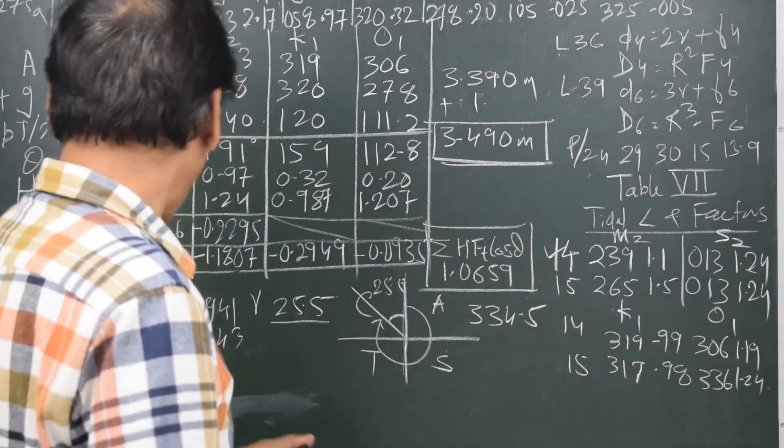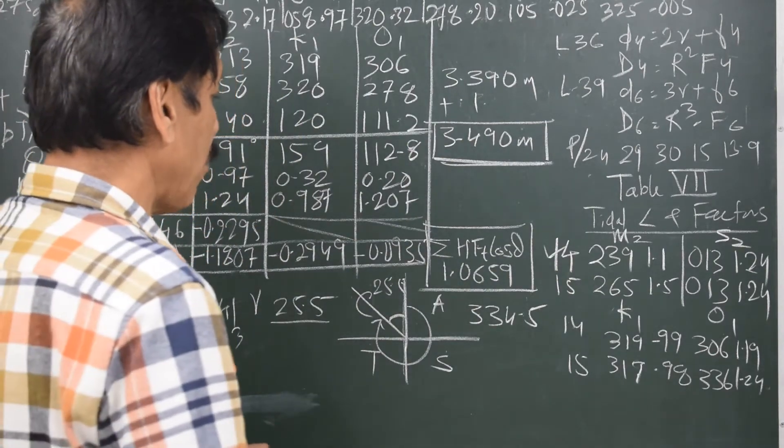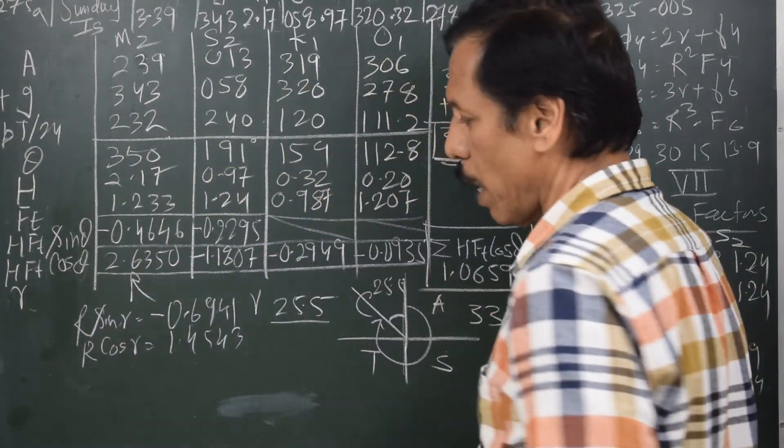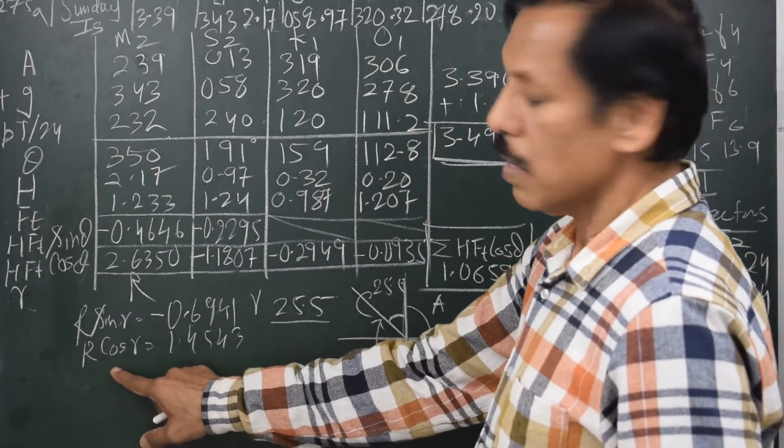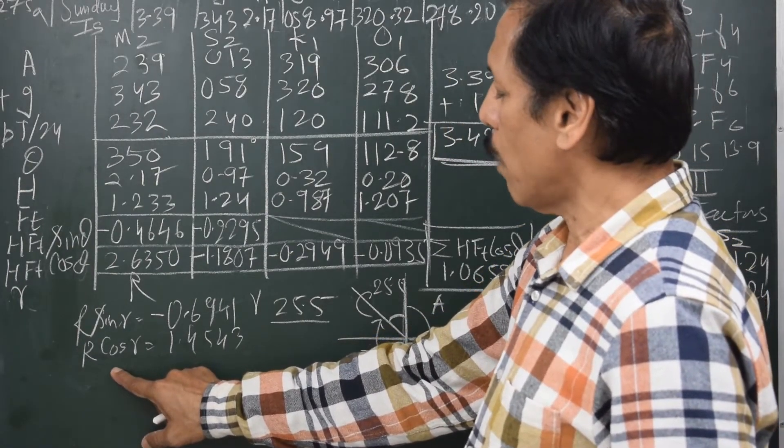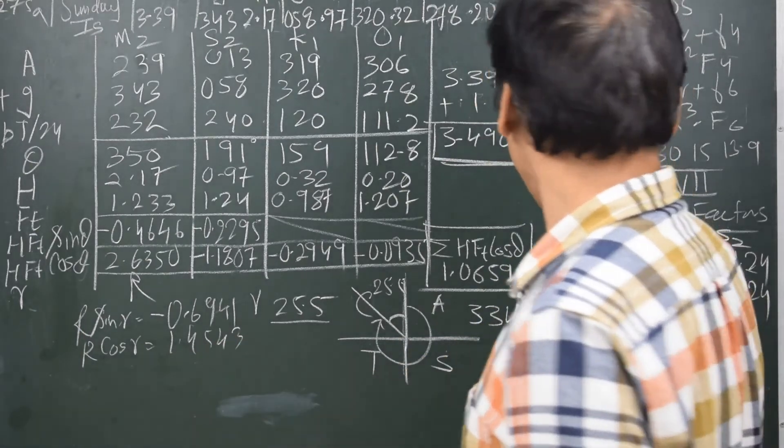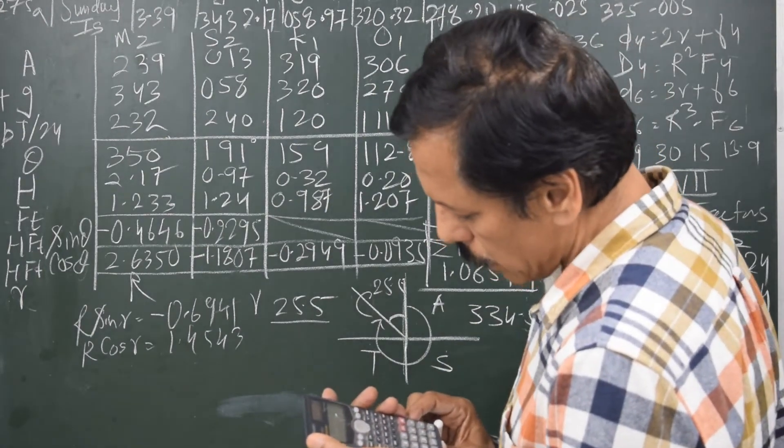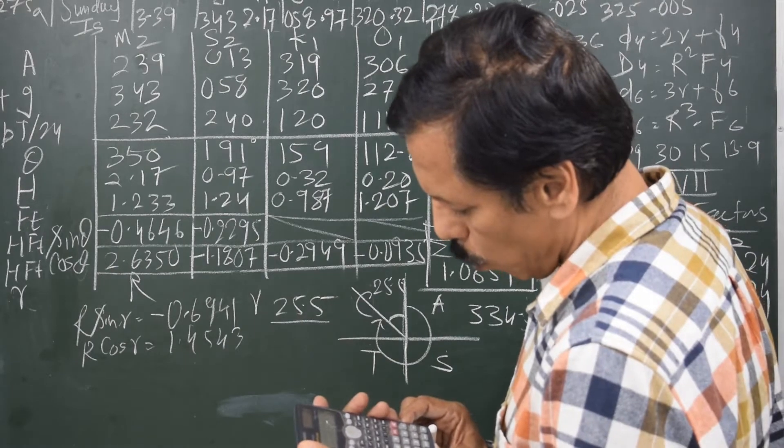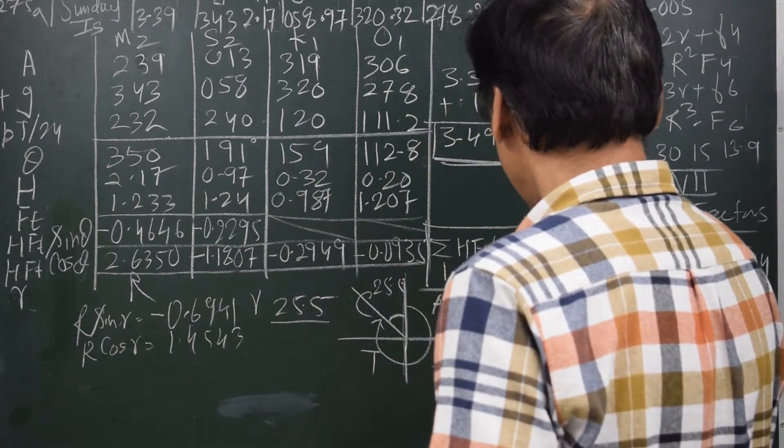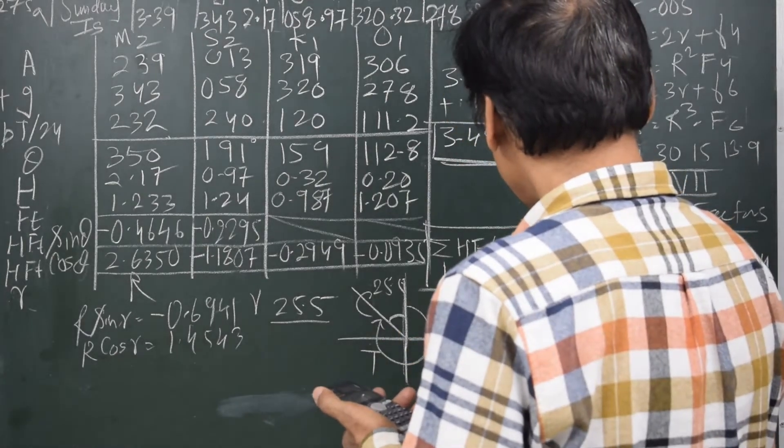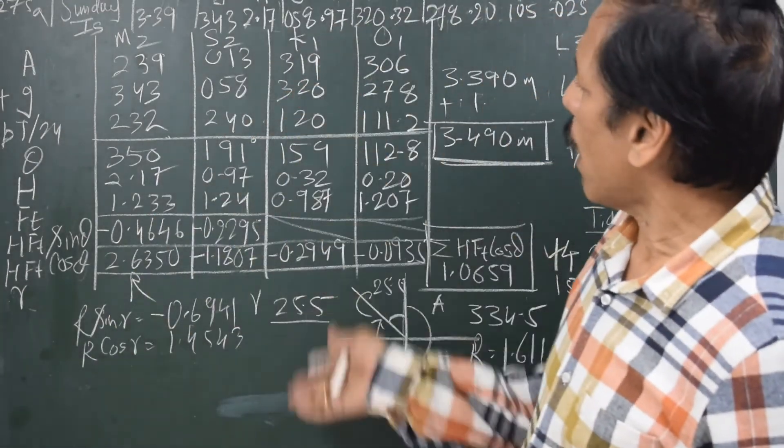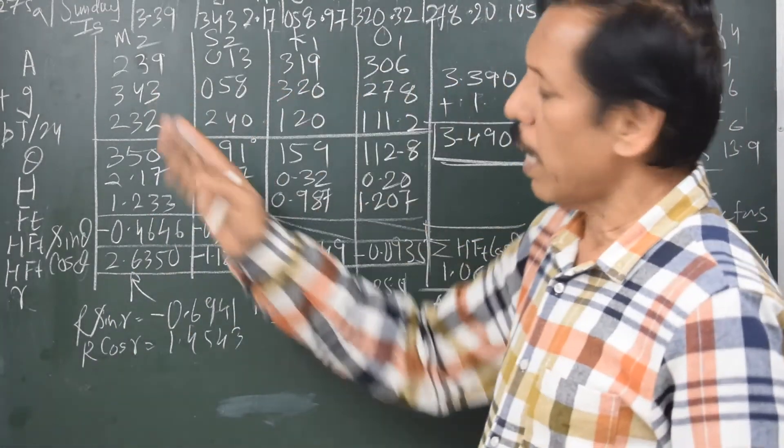For further calculations, please remember that I found the value of small r as 334.5. I'll put this value in one of these equations and find out capital R. For example, I select the second equation, so the value of capital R will be 1.4543 divided by cosine of 334.5, which gives me R equals 1.611. If you have understood the calculation up to here, I would like to erase this part and then do the rest of it.